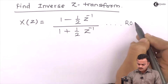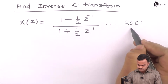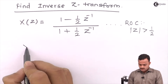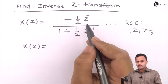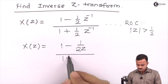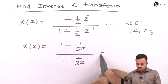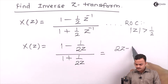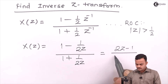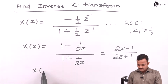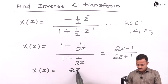The ROC is also mentioned. ROC is |z| greater than ½. Let's simplify this — all z⁻¹ will convert into z. So x(z) we are getting as (2z - 1) upon (2z + 1).